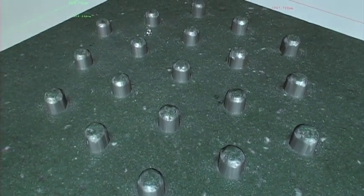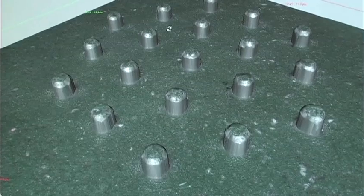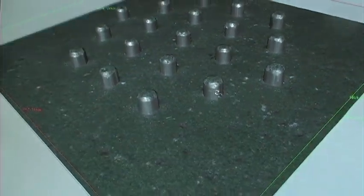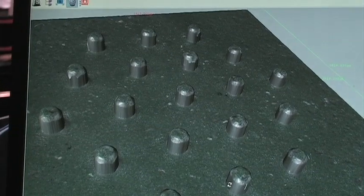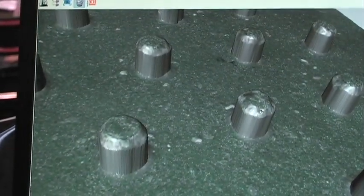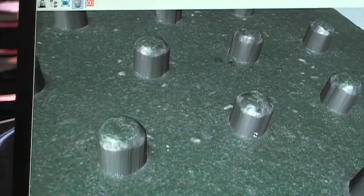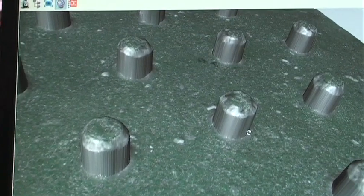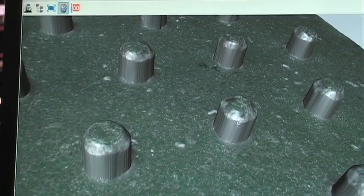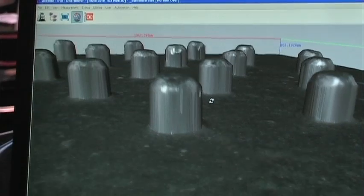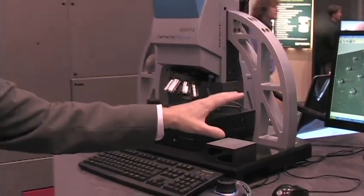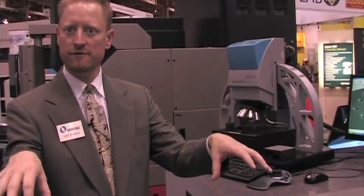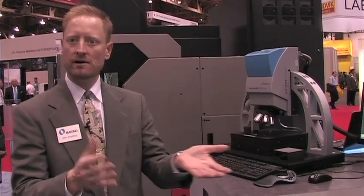And it also provides us a three-dimensional surface map of the features that we're machining. So in this specific application, the pins that we see are approximately 170 microns in diameter by 150 microns in height. So this system allows us not only to validate form accuracy, but also surface roughness, relative location of features.